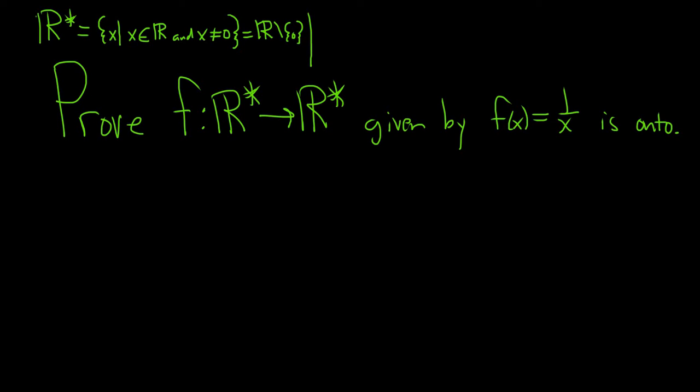We have to prove that the function 1 over x is onto. So recall the definition of onto. We say a function f from capital X, the domain, to capital Y, the codomain, is onto, or surjective.